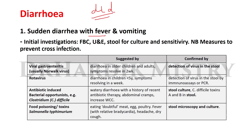The first category is sudden diarrhea with fever and vomiting. Initial investigations include full blood count, urine and electrolyte examination, stool for culture and sensitivity, and measures to prevent cross-infection. Causes include viral gastroenteritis (usually Norwalk virus) in older children and adults, resolving in two weeks; rotavirus in children under five, resolving in one week confirmed by immunoassay or PCR; and antibiotic-induced Clostridium difficile — watery diarrhea with recent antibiotic history, raised white cell count, confirmed by stool culture and C. difficile toxins A and B.